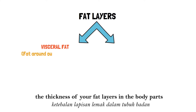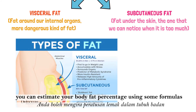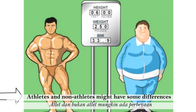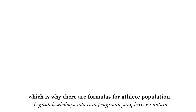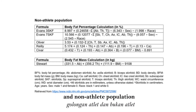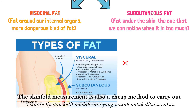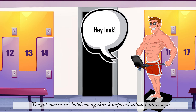Through skinfold measurement, you can get to know the thickness of your fat layers in different body parts. Based on those measurements, you can estimate your body fat percentage using some formulas. Athletes and non-athletes might have some differences in body composition, which is why there are formulas for athlete populations and non-athlete populations. Skinfold measurement is also a cheap method but requires more skill compared to anthropometric tests.